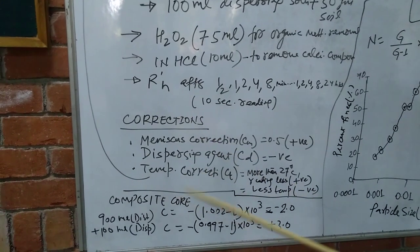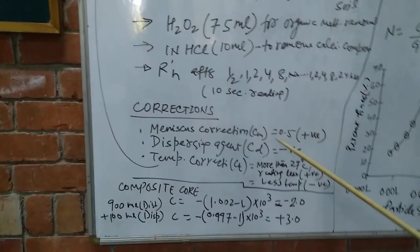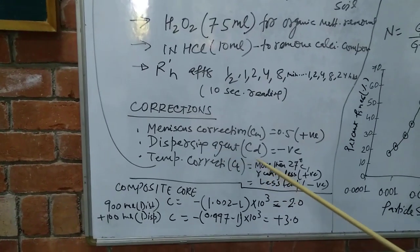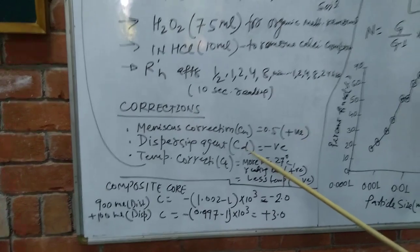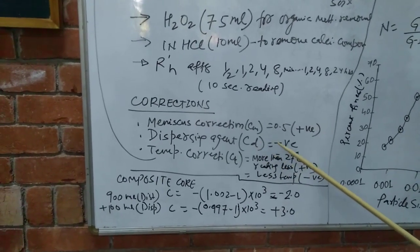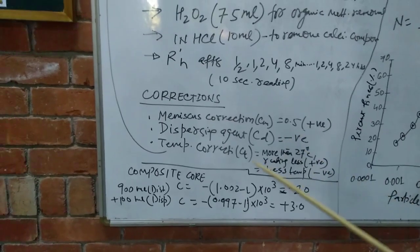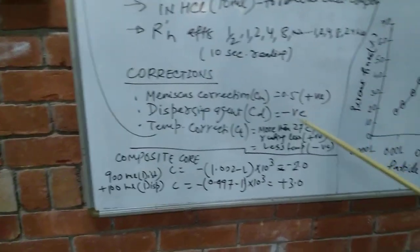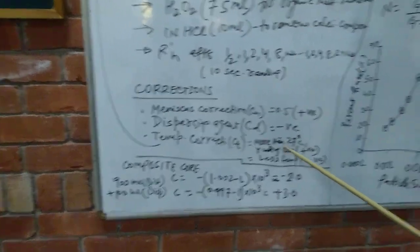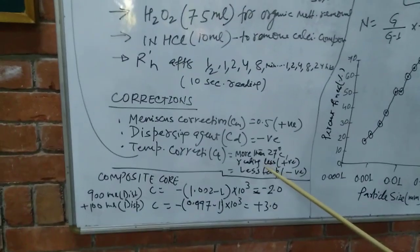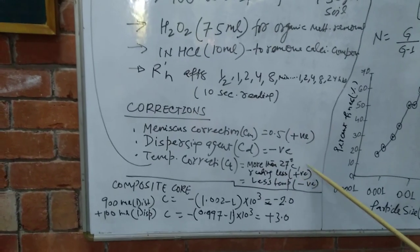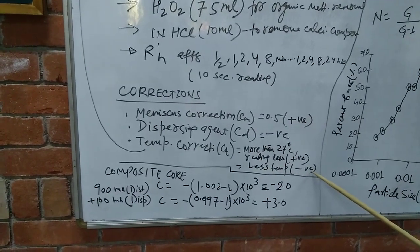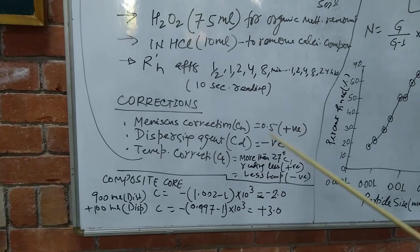How we can find out the various corrections? There are meniscus corrections - we are going to add 0.5. And dispersing agent solution, once you use the dispersing agent solution, the concentration of the solution will increase. In that case, the reading we have to deduct. In case of temperature corrections, as your hydrometer is calibrated at 27 degrees centigrade, and suppose temperature is more, in that case we have to add these values. If temperature is less, then the value we have to subtract.